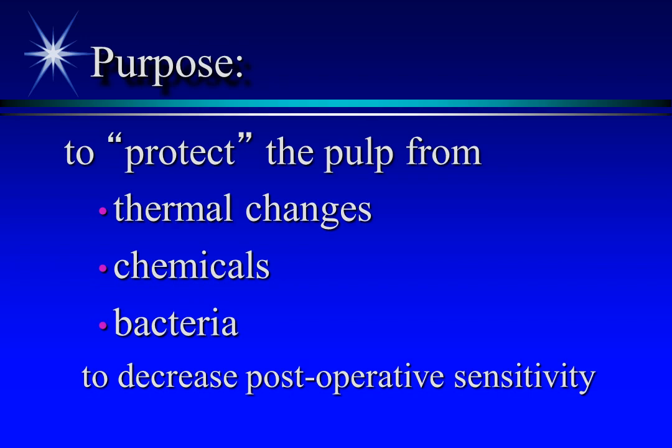Pulp protection is thought of as what the clinician or patient does to protect the pulp from these three sources of insult. The patient's role is oral care: brushing, flossing, topical fluoride, topical calcium phosphate paste, etc. The dentist's role consists of application of a medicated liner or base, use of restorative materials and instrumentation, etc.